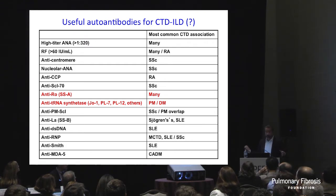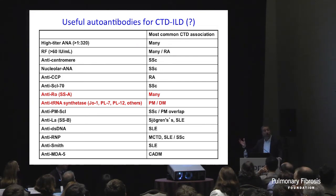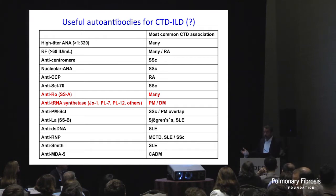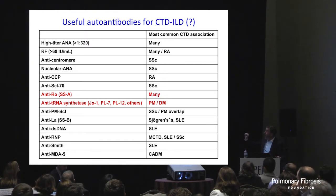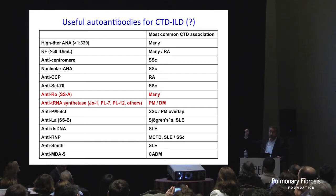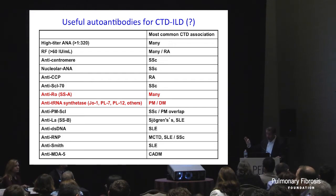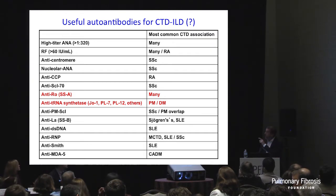The autoantibody list is quite exhaustive. I don't recommend ordering everything in all patients, but in those with suspicious features for CTD, yes — be very broad. If a patient has no CTD features, is a 70-year-old man with UIP, I'm not sure what you do with a positive rheumatoid factor. Highlighted in particular are the synthetase antibodies — those patients are often ANA negative, so you cannot stop with the ANA, because it's frequently negative in synthetase myositis patients.